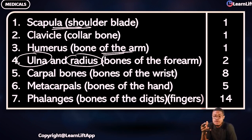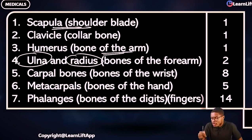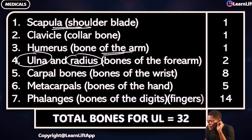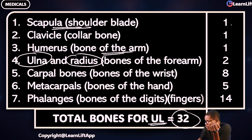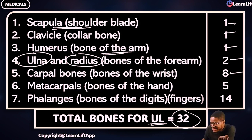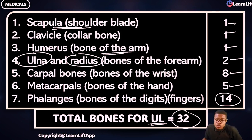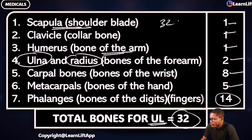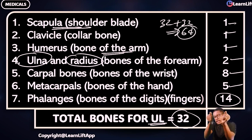So how many bones do we have in the upper limb for one side? Total bones for one upper limb: 32. Add them all — one plus one plus one equals three, plus two is five, plus eight is thirteen, plus five is eighteen, plus fourteen is 32. For both upper limbs — 32 plus 32 — that is 64 bones altogether.